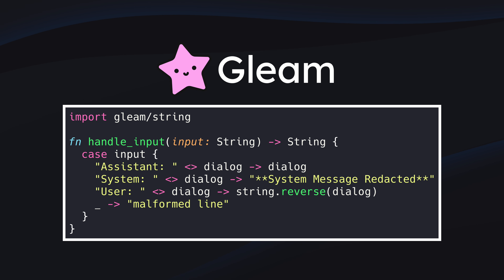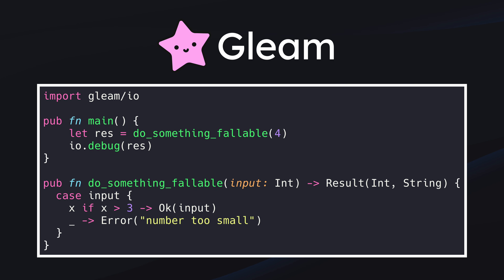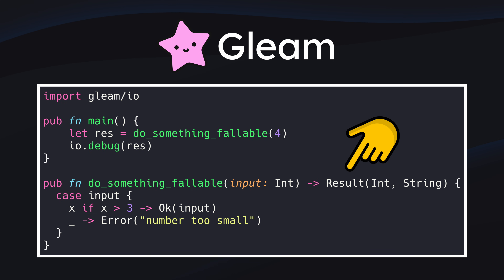Gleam doesn't have if-else statements at all. Anywhere you'd normally use an if-else, you're going to have to use a case statement instead. In Rust, we have the assertEQ macro for verifying things in our tests. In Gleam, there's a package called GleeInit that has a module called should, with functions like equal that do the same thing. Gleam doesn't have any exceptions, and its result and option types are pretty much identical to the Rust counterparts. The idiomatic way to write fallible functions is to have them return a result.